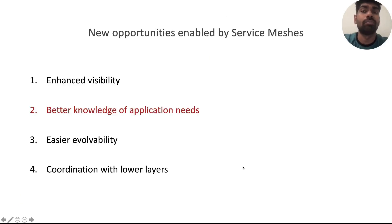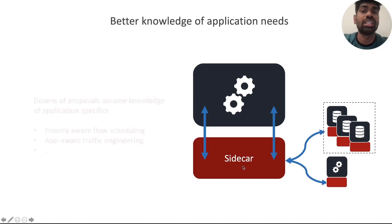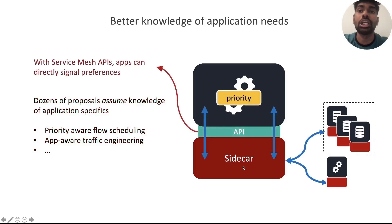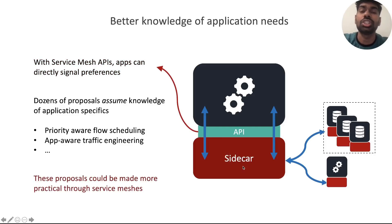Going beyond passive monitoring and visibility, we identify how service meshes explicitly gain better knowledge of the application's needs. Dozens of research proposals for various optimizations like priority-aware flow scheduling have been proposed in the past, which all assume knowledge of flow priority. With an explicit service mesh API, applications can now directly signal preferences. For example, knowledge of flow priority or sizes could be passed down to the sidecar, thereby making it available to the lower layers and helping make such research proposals more practical in reality.